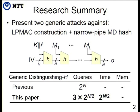We consider two attacks. The first one is distinguishing-H. In previous work, it was believed that the generic attack will cost 2^N queries. But in this paper, we gave a new attack which only requires three times the birthday queries, and also birthday-order computational complexity. We also gave another attack called Almost Universal Forgery Attack. That's the summary.